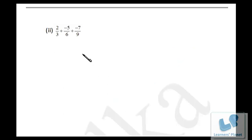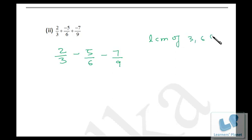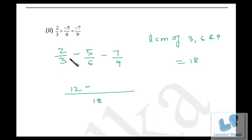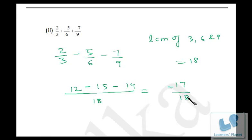Now here, first rewrite the expression. Take LCM of 3, 6, and 9 — that is 18. Three times six is 18, so six times 2 is 12. Minus six times three is 18, so three times 5 is 15. Minus nine times two is 18, so two times 7 is 14. So 15 plus 14 is 29, and 29 minus 12 is negative 17, over 18.